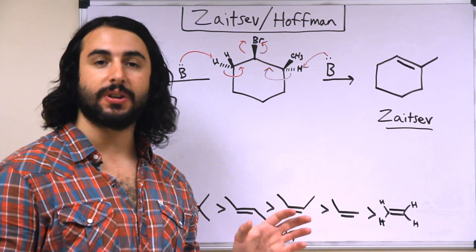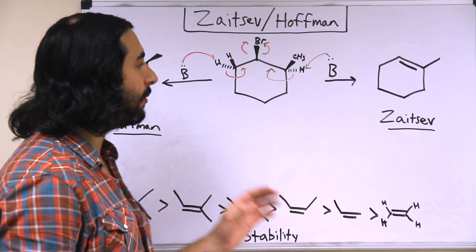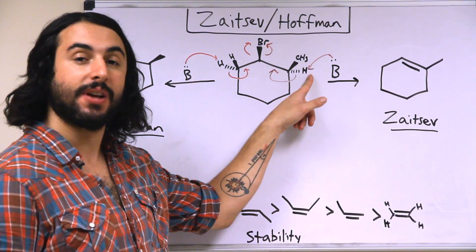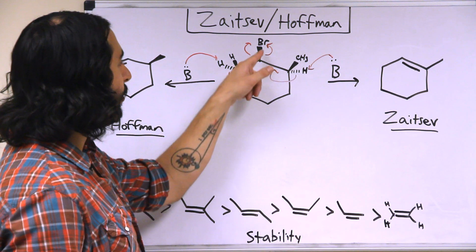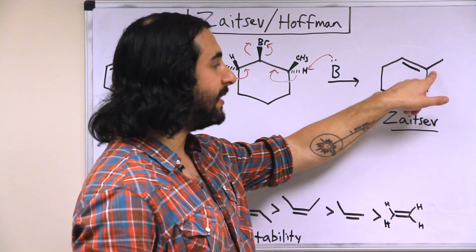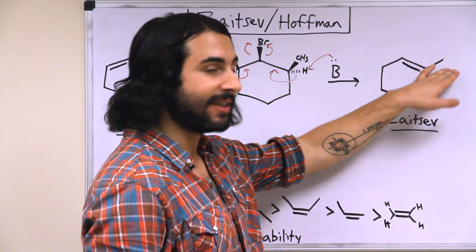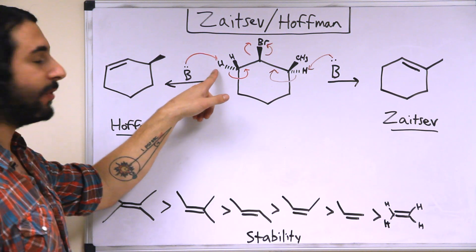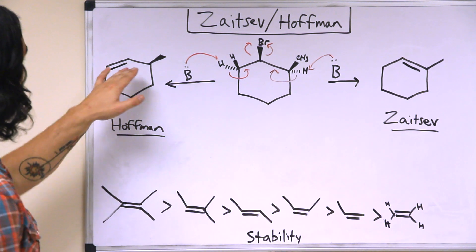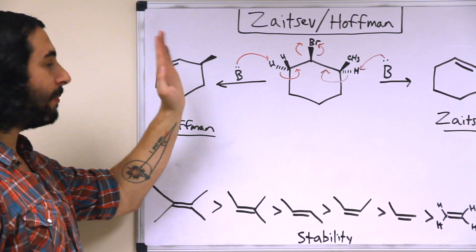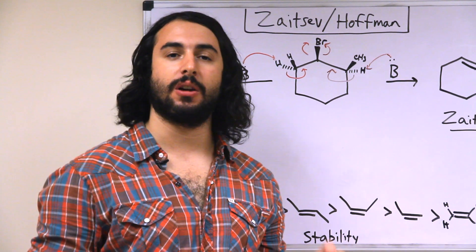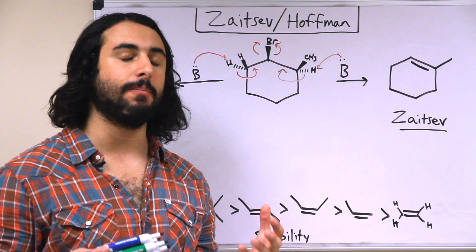There are two different kinds of protons that can be extracted that will yield two different products. For example, if a base takes this proton here and the electrons go to form the double bond and kick out the bromine, we get this product here — that is sp2 trigonal planar, so this methyl group flattens out. Or we can extract a proton over on this side, form the double bond there, leaving this side of the molecule untouched, so this would remain sp3 with a wedge bond for the methyl group. So these are different molecules, different products, both are possible, and most likely we're going to get a mixture.